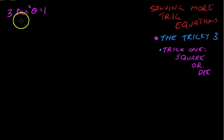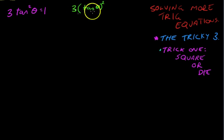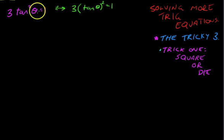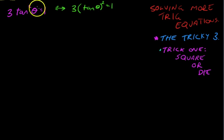Just so we're fully understanding this, I'm going to rewrite it — generally you wouldn't do this, but I want full clarity. Three tan theta squared: that's three times all of this squared equals one. So this and this are equivalent expressions. Just keep in mind that if you see tan squared theta, what it actually means is all of tan theta, squared.